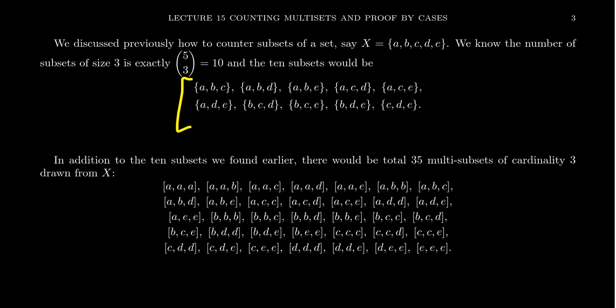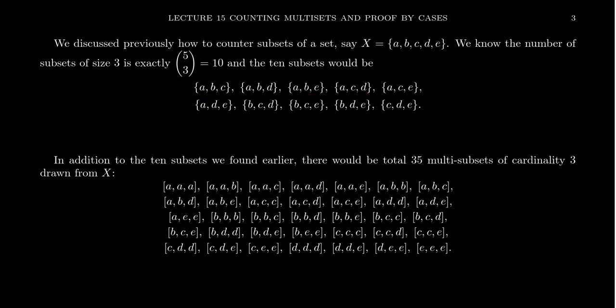With this set of five elements, there are exactly 10 subsets of size 3: {a,b,c}, {a,b,d}, {a,b,e}, {a,c,d}, {a,c,e}, {a,d,e}, {b,c,d}, {b,c,e}, {b,d,e}, and {c,d,e}.